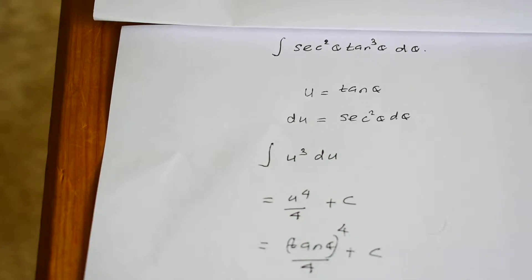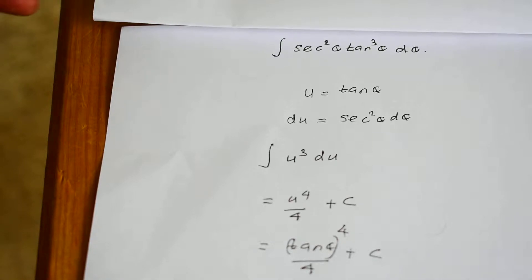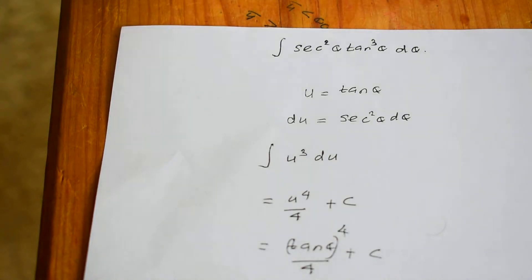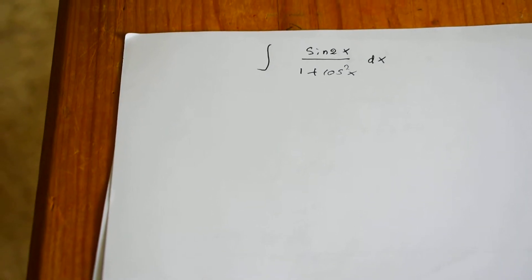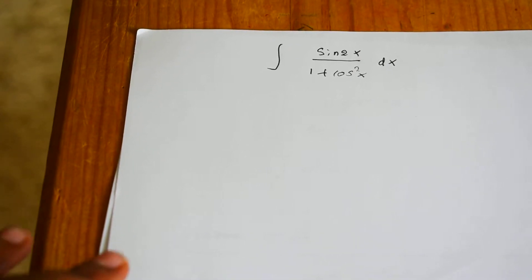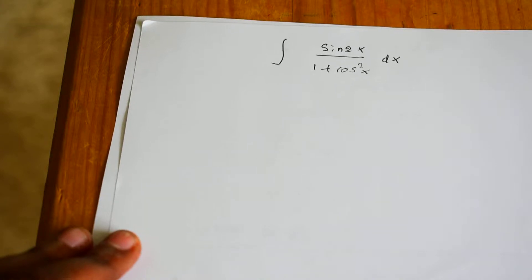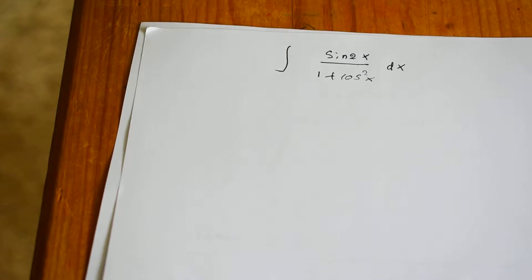Your final answer for this question should be tangent theta to the power 4 divided by 4 plus C. This is an example of how you can use u-substitution when you have an integral in terms of trig quantities. Next I am going to do another example which also contains some trig identities. You have to take the integration of sine 2x divided by 1 plus cosine squared x.